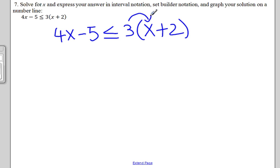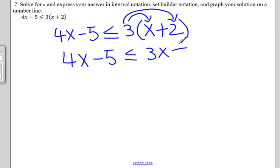Distribute 3 to the x and 3 to the 2, so that we get 4x minus 5 less than or equal to 3x plus 6.